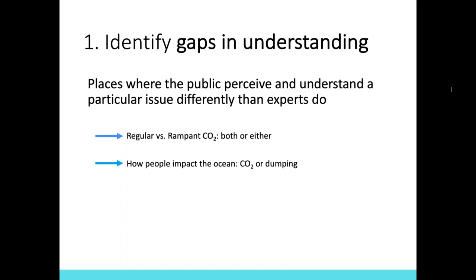The second gap is how people impact the ocean. Research shows that a lot of general public members think that our largest impact on the ocean as a species is physically dumping things into the ocean — which is why this social science research is so important. Whereas arguably the biggest impact we have on the ocean is our footprint of putting carbon into the atmosphere.